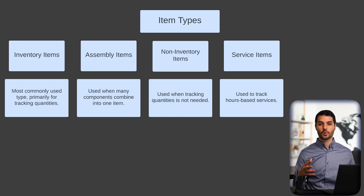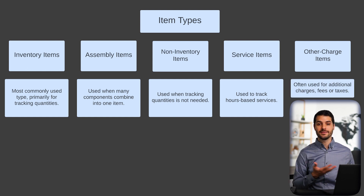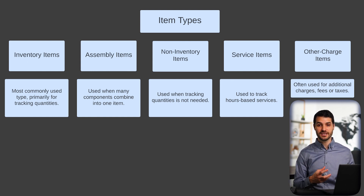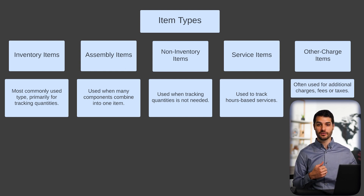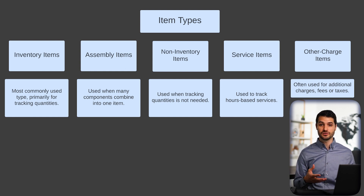Then we have other charge items, which are often used for things like fees or taxes. In the example of the bike, if the bike costs $100 but there's also a $10 shipping fee to send it out, you can attach that shipping fee to the sale as an other charge item — basically passing the shipping fee on to the customer. You can also include additional taxes or other charges you want to bundle in with the sale price.